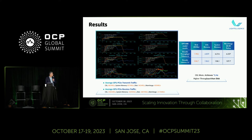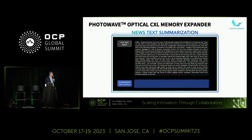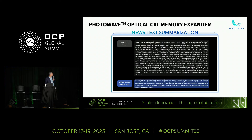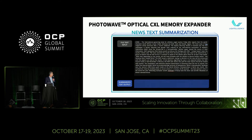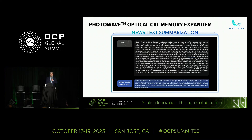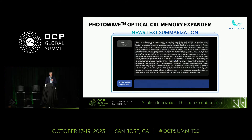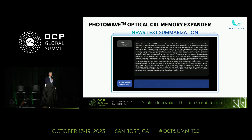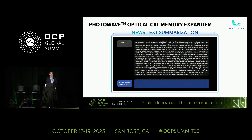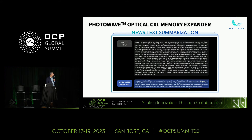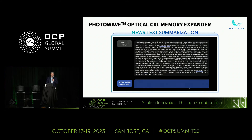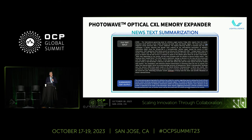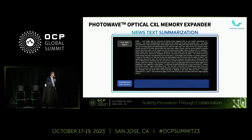The most important number is the 2.4x performance improvement using CXL memory alone versus SSD. The workload — news text summarization — takes a block of text and summarizes it. That's what the OPT-66B model is doing. You can imagine your 6 o'clock news anchor who doesn't want to read the whole thing — he wants the summary.